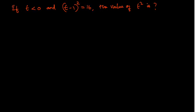We have two pieces of information. One is t < 0, and the second is (t-1)² = 16. From these two pieces of information, we have to get the value of t².